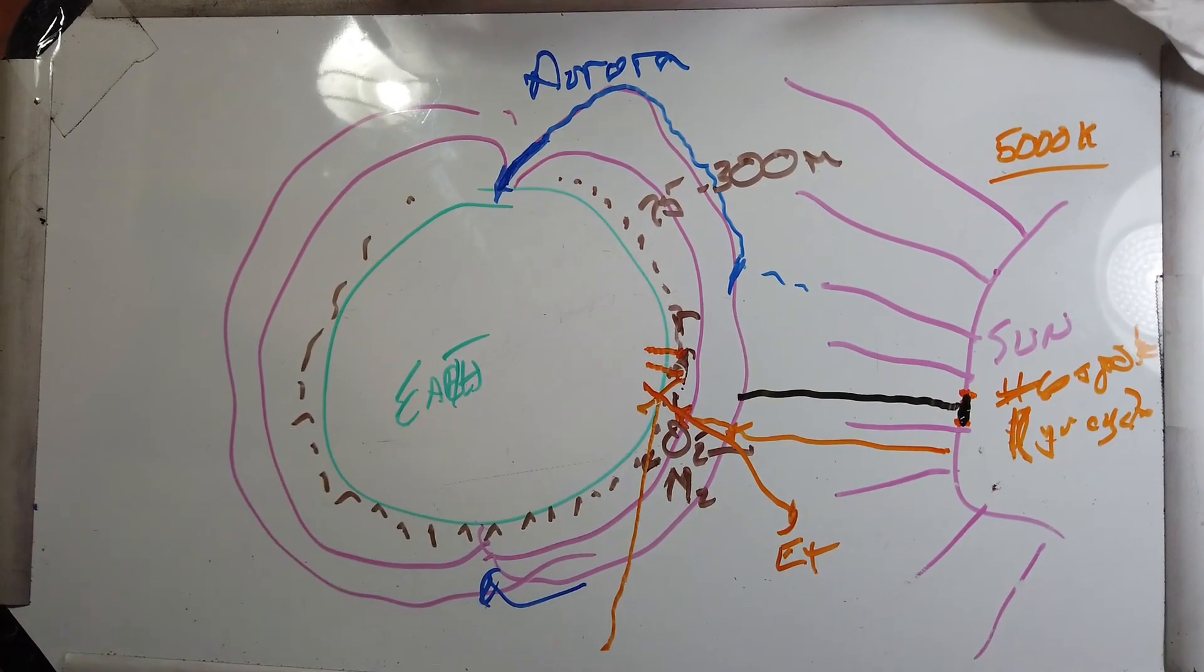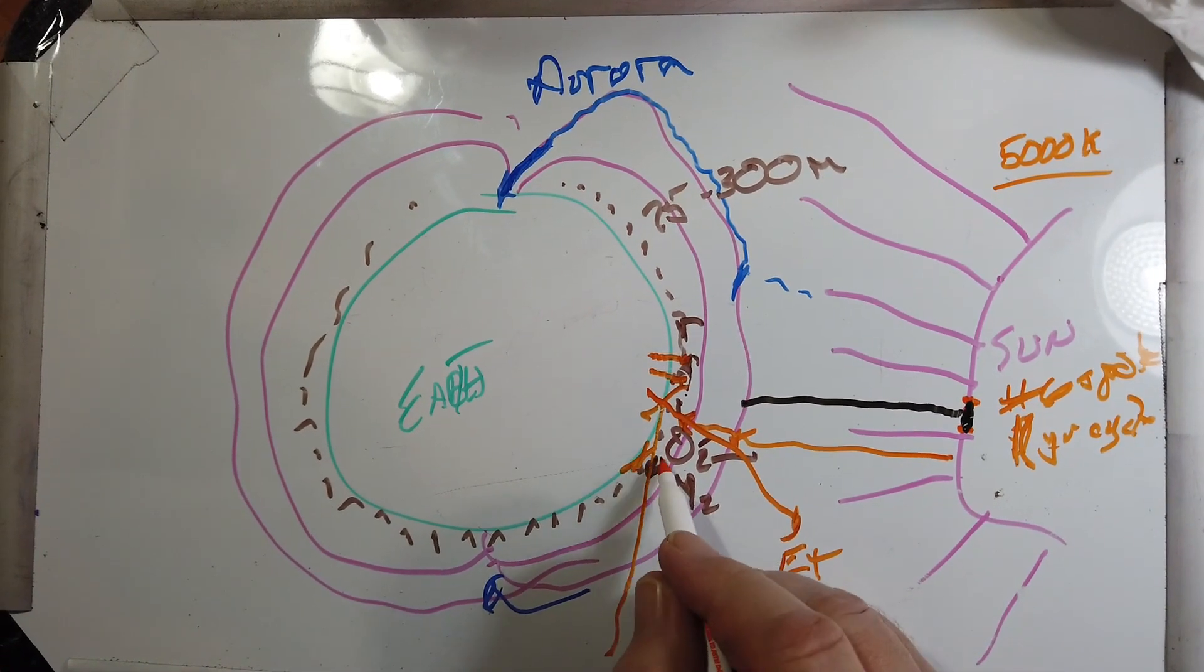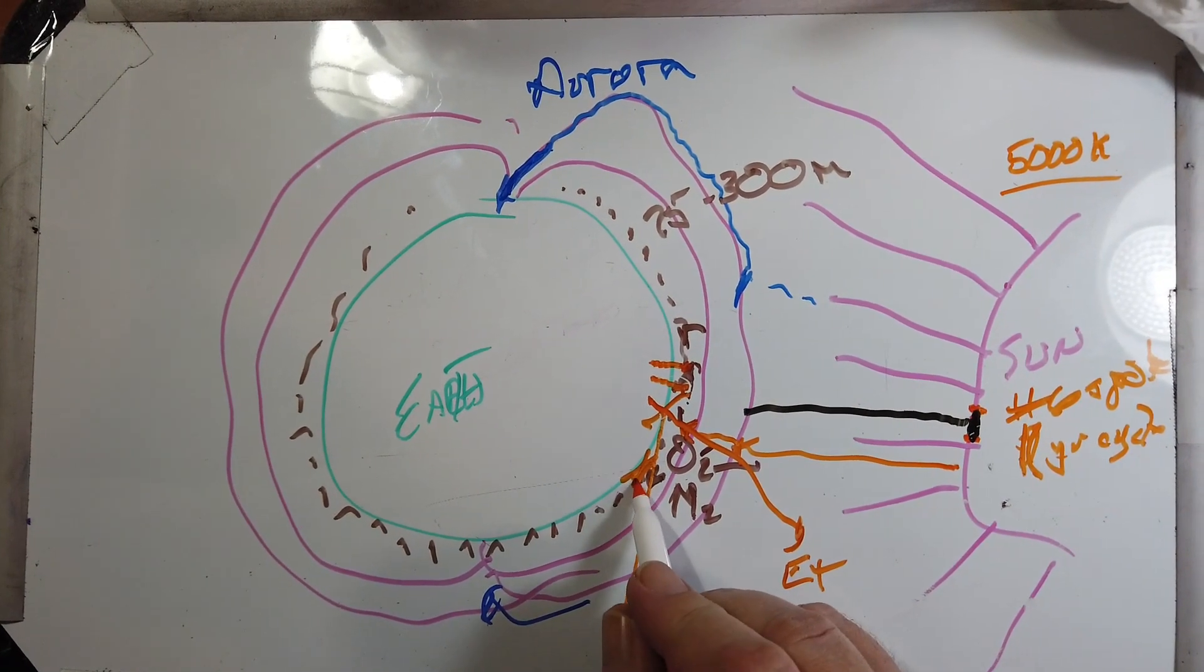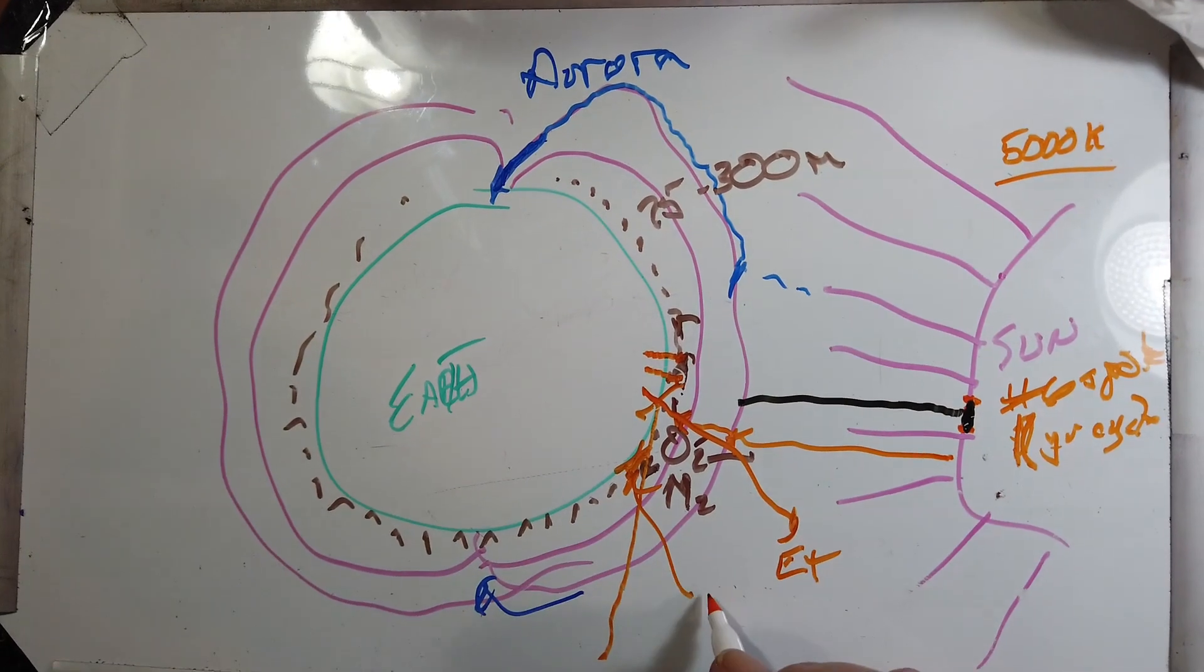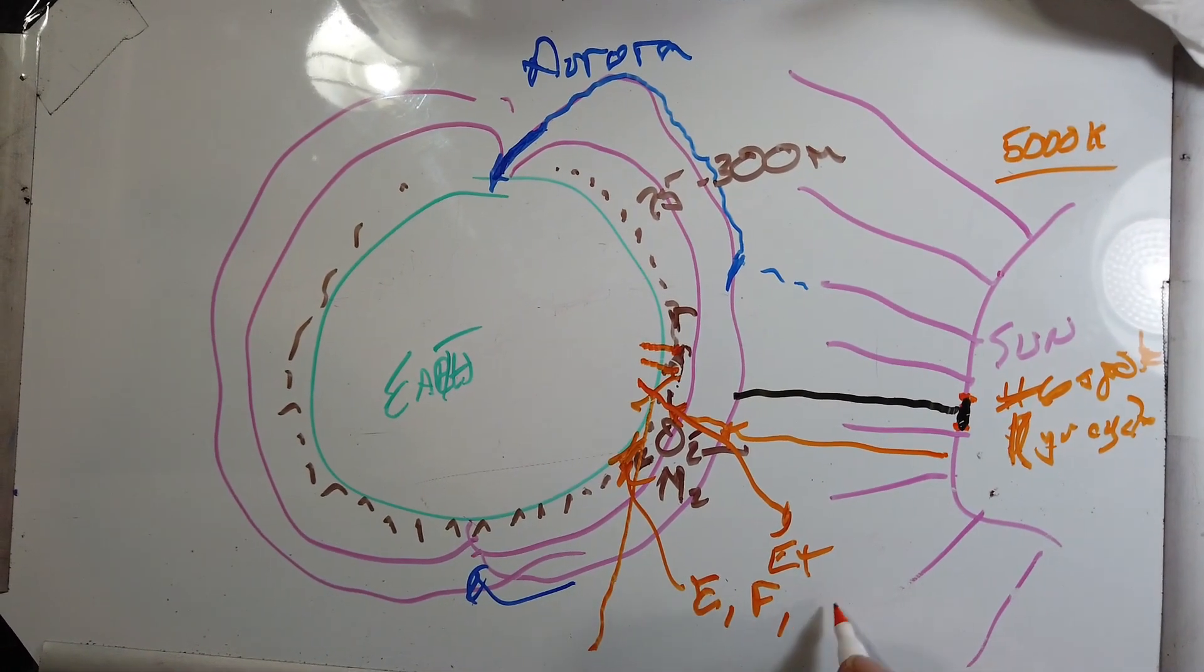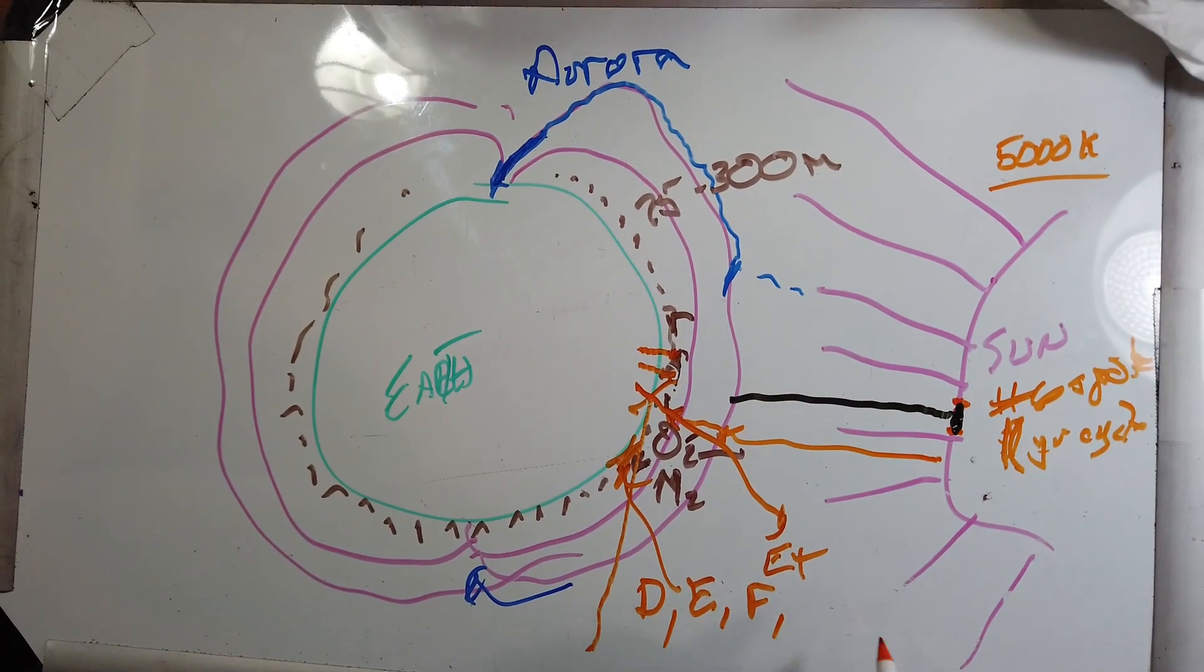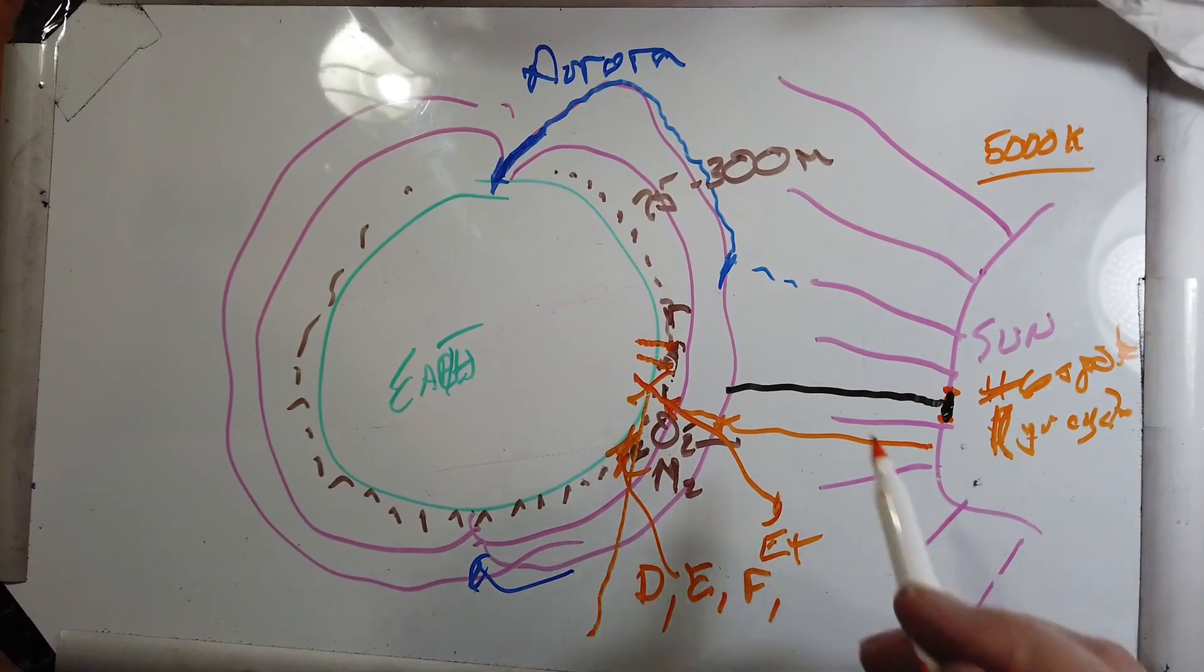The more sunspots are ionized, the higher the frequency you can use for these reflections. And there are layers in the ionosphere. There's the E layer, the F layer, and the D, E and F layers.